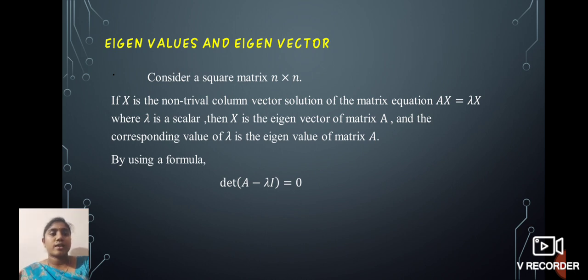then x is the eigenvector of matrix A and the corresponding value of λ is the eigenvalue of matrix A by using the formula det(A - λI) = 0.